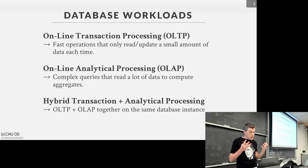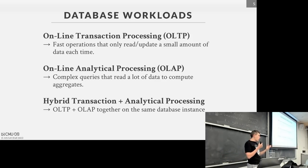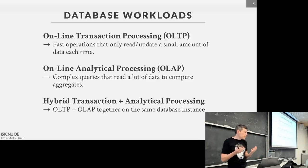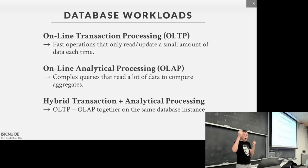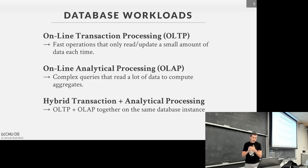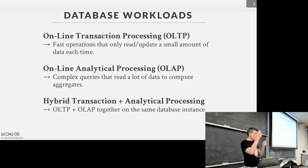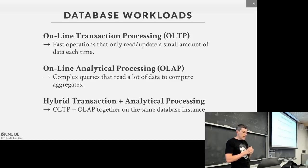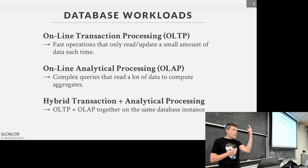The first category of applications is called OLTP — Online Transaction Processing. These are applications where you're ingesting new data from the outside world and serving a lot of users at the same time. The example I always like to use is Amazon: when you go to the website, look at products, add them to your cart, purchase them, or update your mailing address — those are all OLTP-style workloads because you're making changes to a small subset of the database.